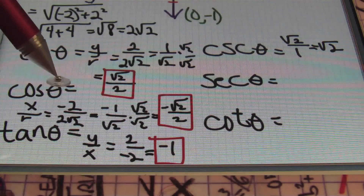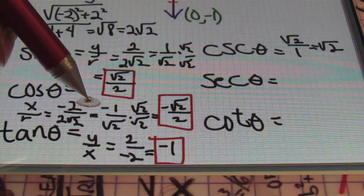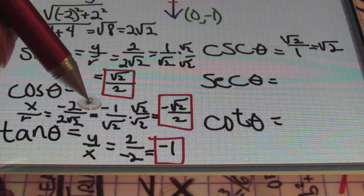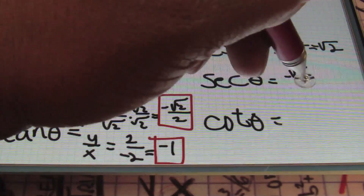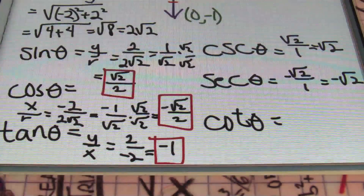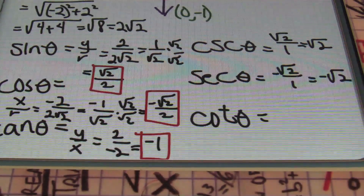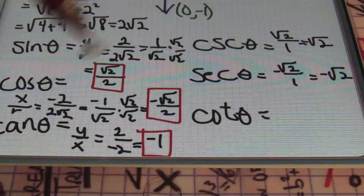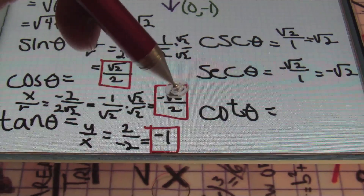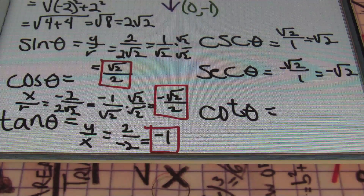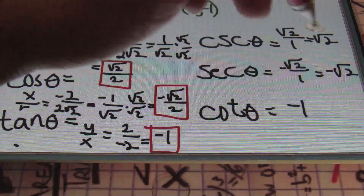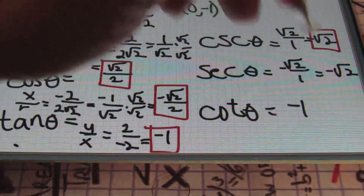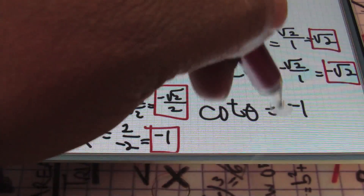Looking at secant theta, remember we were able to write cosine theta in the form of negative one over the square root of two. So flipping that value, I'll end up with a negative square root of two over one, which simplifies to give me negative square root of two. Then, looking at cotangent theta, remember tan theta is equivalent to negative one, and the reciprocal of negative one is still negative one. So my answer for cotangent theta is negative one. That's going to be all six trig values for the point negative two, two, which lies in the second quadrant.